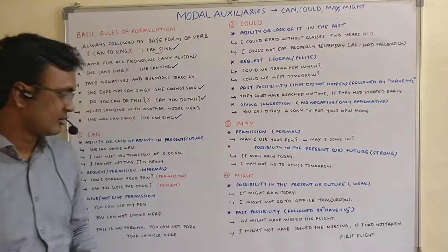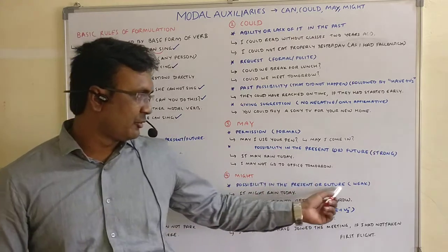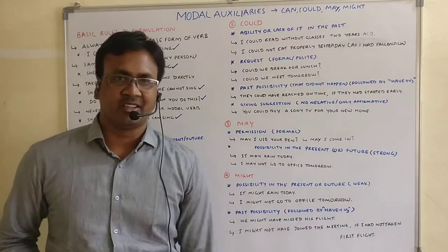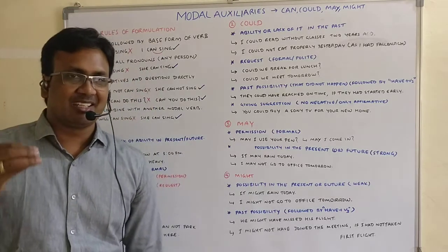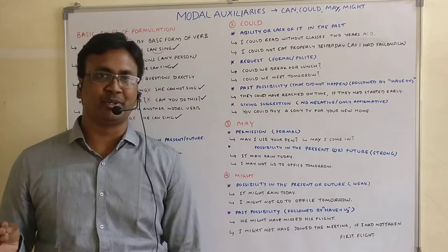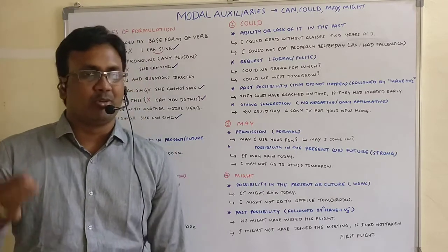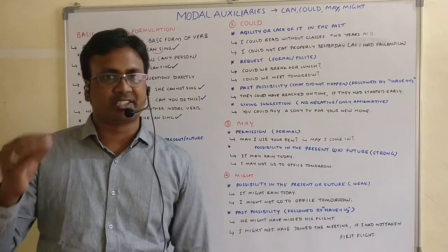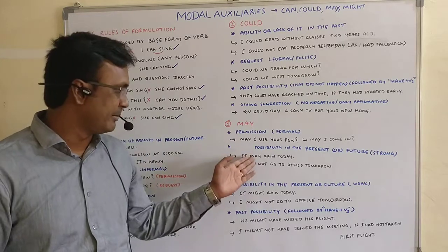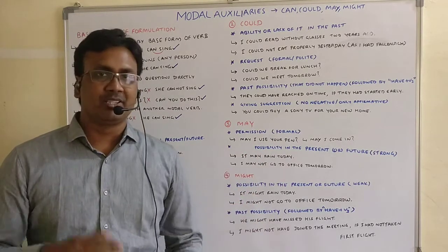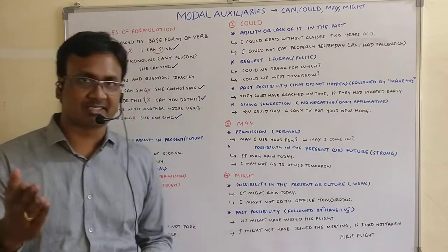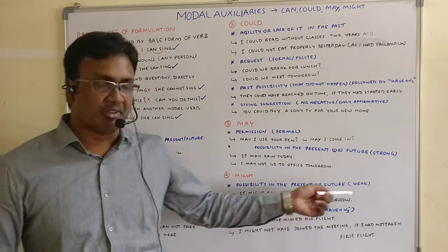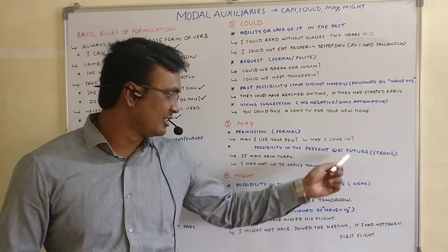The fourth modal is 'might,' which also has two use cases. The first is possibility in the present or future — but weak. Compare: 'It may rain today' means the possibility is more, whereas 'It might rain today' means the possibility is less. When you want to indicate a weak or low possibility, you use 'might.' When you want to indicate a strong or high possibility, you use 'may.' They can replace each other, but the degree of strength changes. 'I might not go to office tomorrow' shows lower possibility than 'I may not go.'